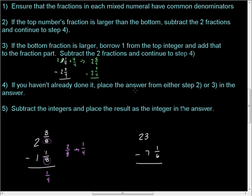If you haven't done it, place the answer from either step two or step three in the answer. And we did that. We put our answer one quarter down in the answer spot. Step five. Subtract the integers and place the result as the integer in the answer. Two minus one is one. And there's our answer. And so, see, that's not bad.